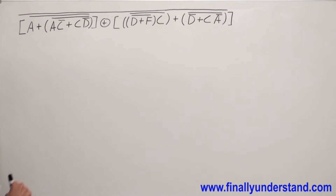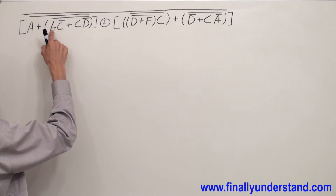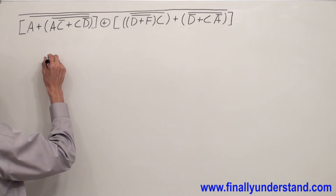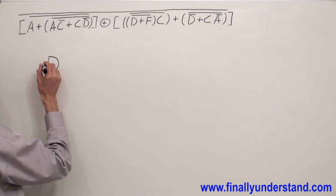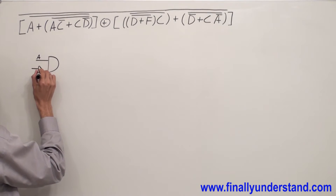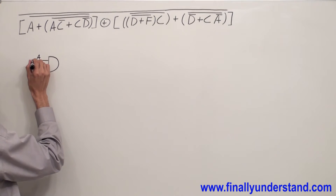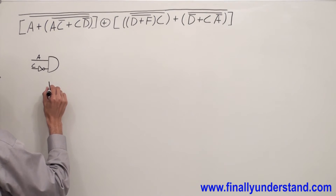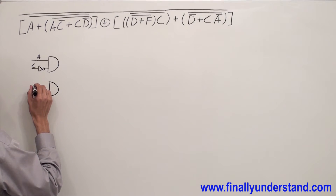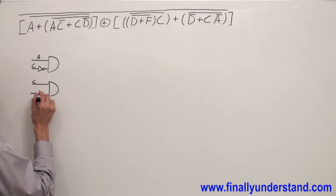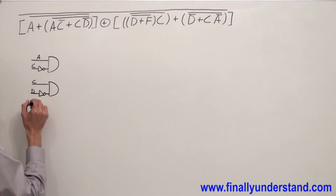Inside of these parentheses, I have an AND gate — A is ANDed with inverted C — that's why I'm going to draw an AND gate with input A and with the inverter C. The next gate is also AND, and this time I have C and inverted D.